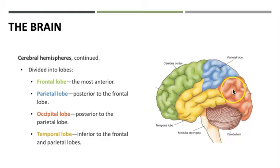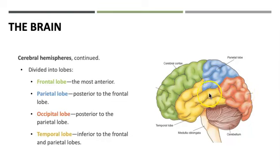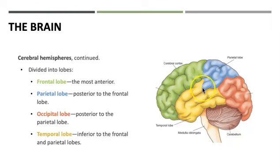Continuing posteriorly, we find the occipital lobe, which is where we process visual information, including recognizing shapes and colors. And then we have the temporal lobe, found inferior to the frontal and parietal lobes, which processes sensory information of smell, taste, and sound. Specific areas in the temporal lobe also play a role in language, reading, and memory storage.